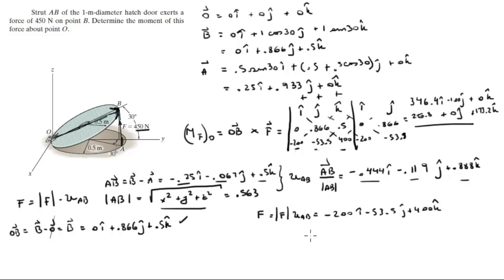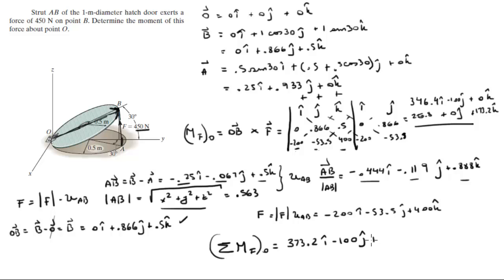Adding all terms together, the moment that the force creates about O comes out to be 373.2i − 100j + 173.2k. Since the force is in Newtons and the distances are in meters, this result is in Newton-meters.